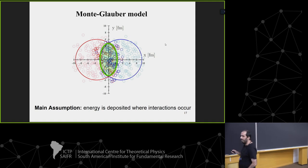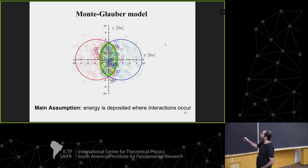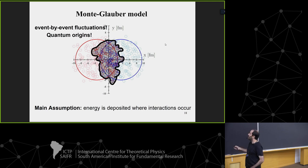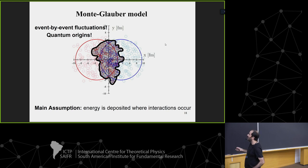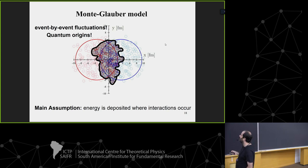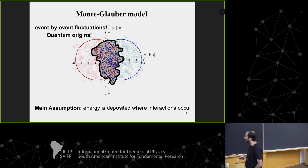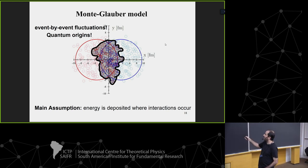Without fluctuations, the interaction zone would be a perfect ellipse or rugby ball shape. But because we sample each nucleon's position, the actual interaction zone is a fluctuating shape that changes event by event, even at the same impact parameter. This is an event-by-event fluctuation with quantum origins — it has to do with sampling the wave function of the nucleus. All the energy is deposited in this kind of fluctuating area.